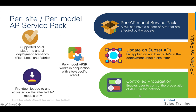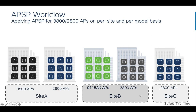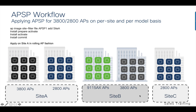At the time of AP Service Pack activation, the user selects the sites where the AP Service Pack should be rolled out. All APs on the site will be updated with the designated service pack, including any new APs that join the site after the filter is applied. This provides the user with the ability to control the propagation of a service pack in the network.